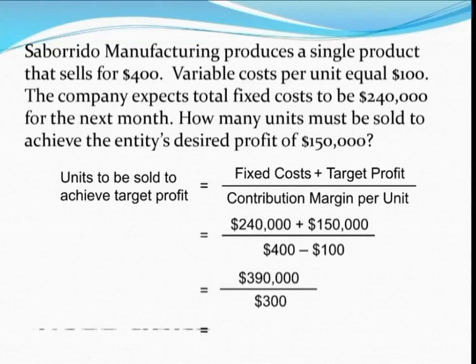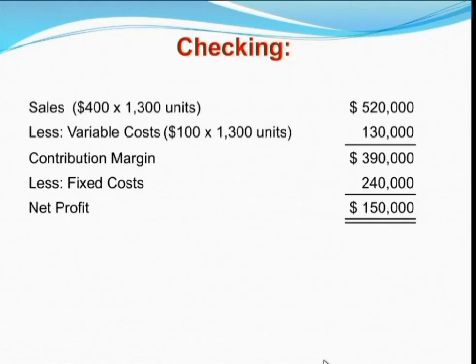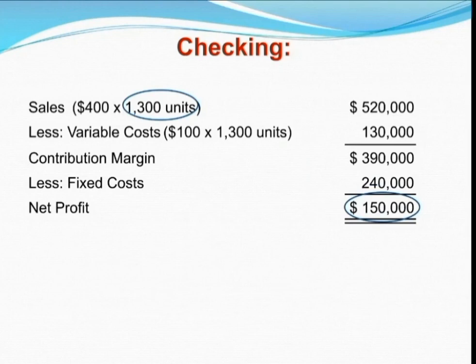We just have to add the value, and that gives us 1,300 units. As proof, we may present a variable costing income statement, where we can see that selling 1,300 units will indeed provide the entity with the desired profit of $150,000. And that is really important.